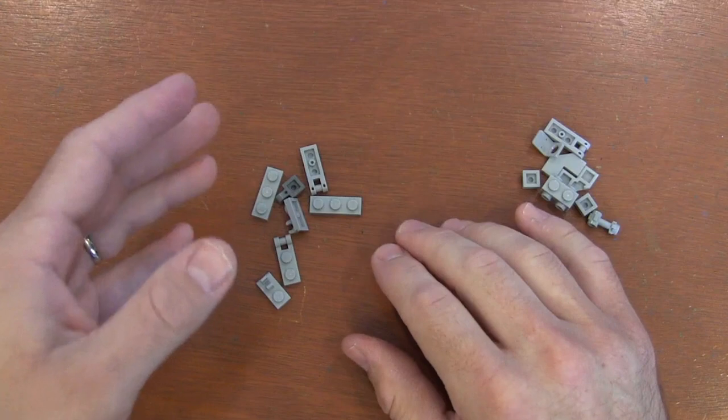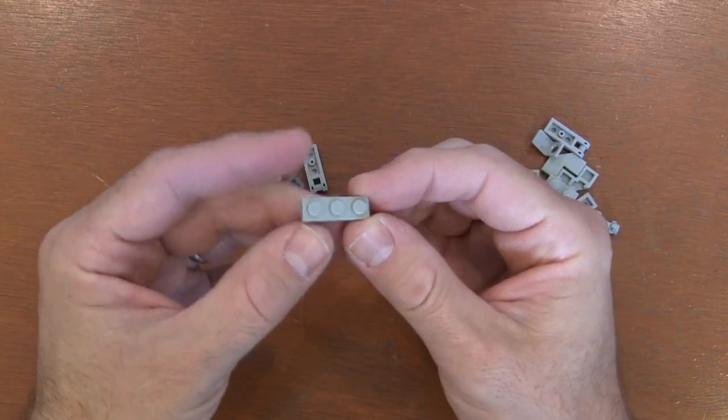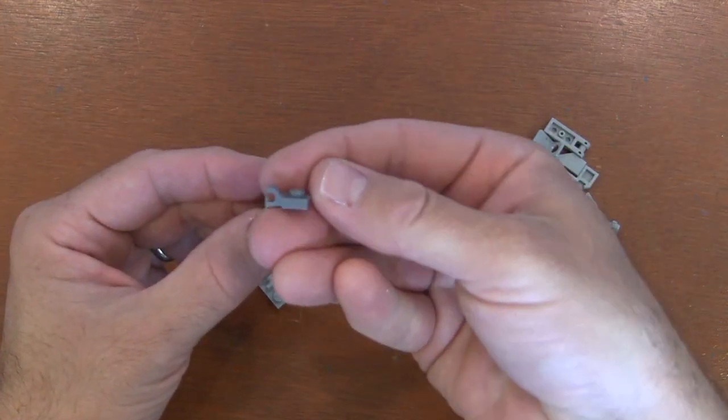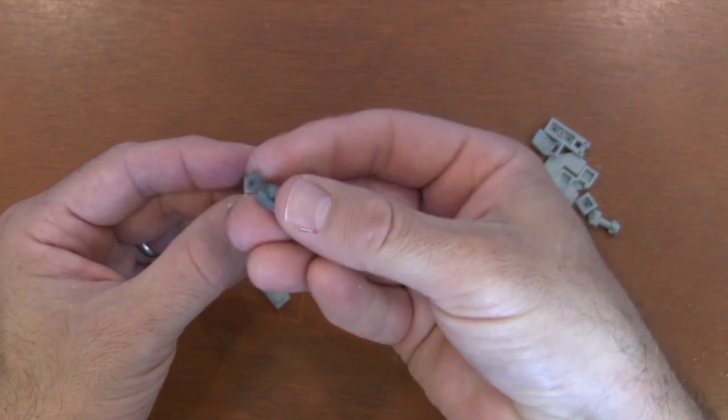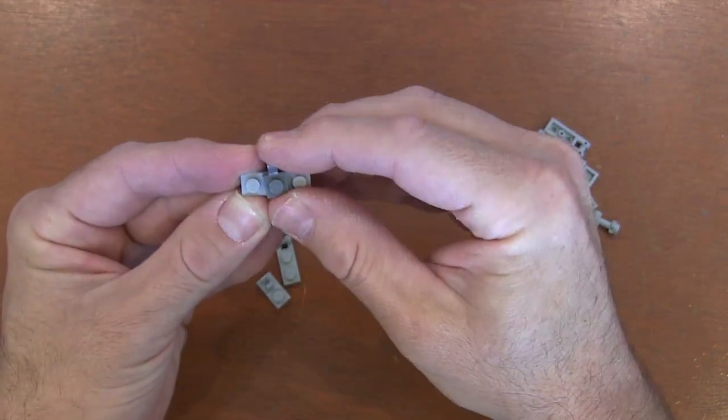We're going to start with the legs of our walker. And to do that, we're going to begin with a 1x3 plate piece. And on that center stud, I'm going to grab a 1x1 plate with a vertical clip and put it so that clip is facing up. I put it in the center stud, facing up like this.